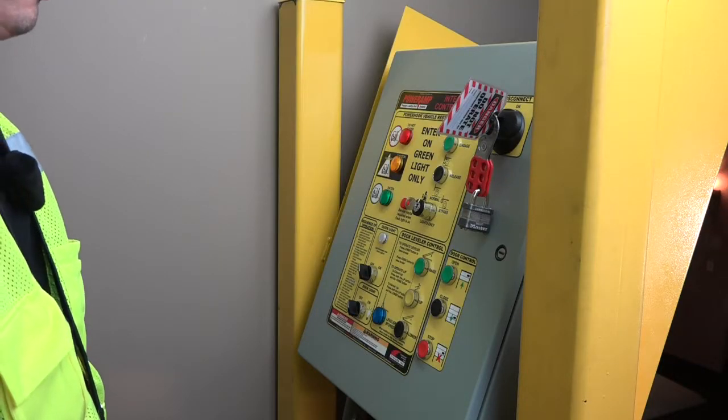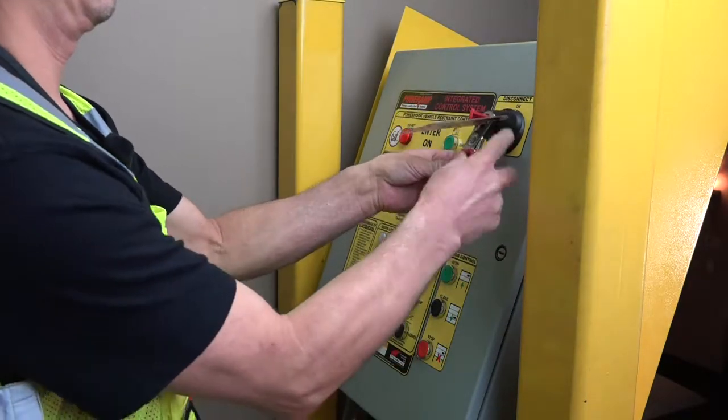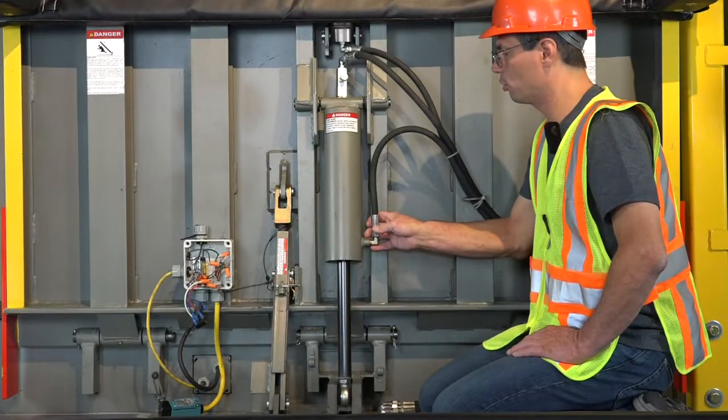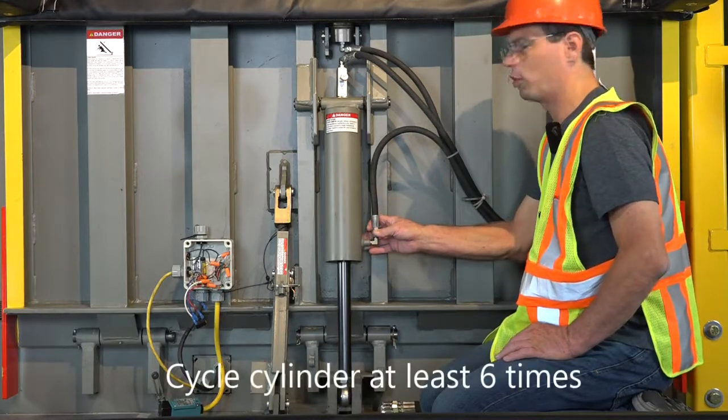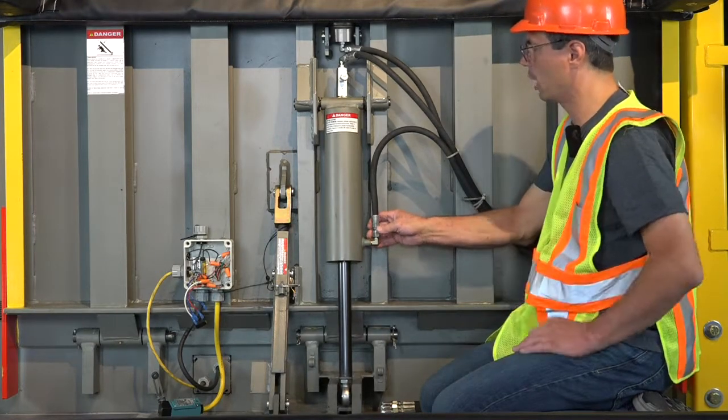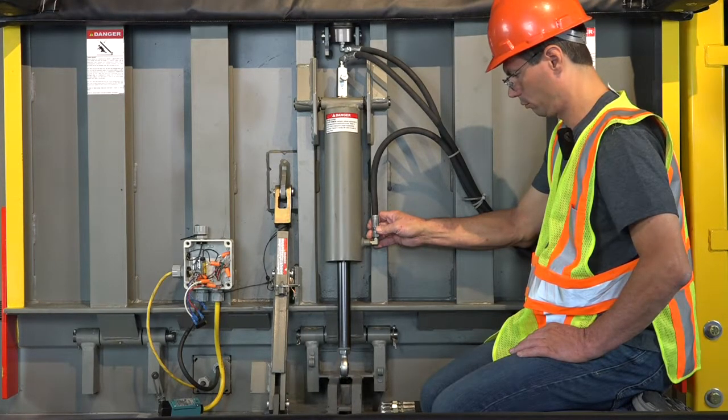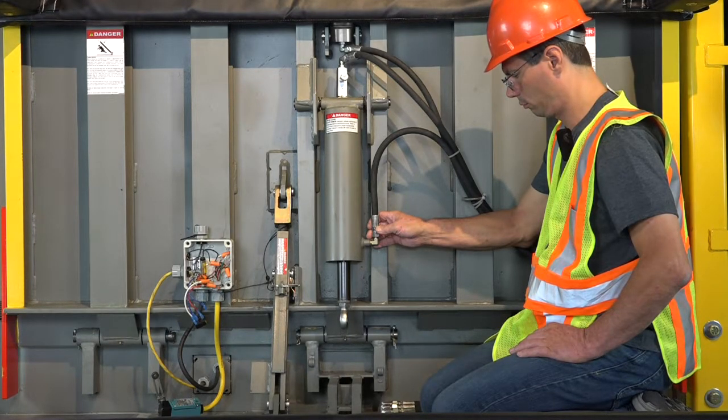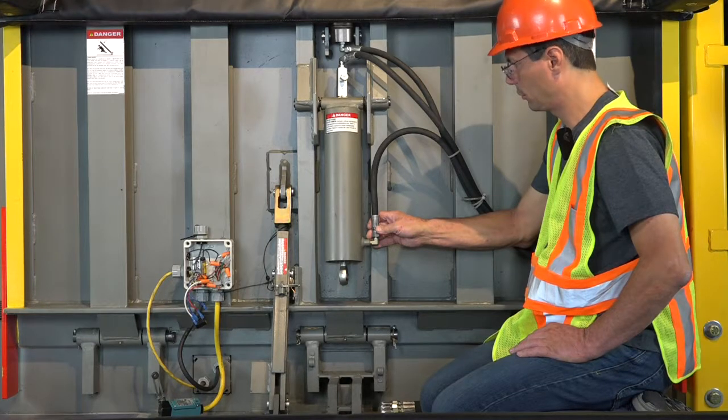Before we can bleed the cylinder, we'll have to remove the lockout tag out so we can run the dock leveler. We want to cycle all the air out of the cylinder. To do that, we're going to raise and lower the dock leveler. The cylinder will run up and down and work all the air out of it. We want to do this at least six times. But for demonstration purposes, we're just going to do it once.